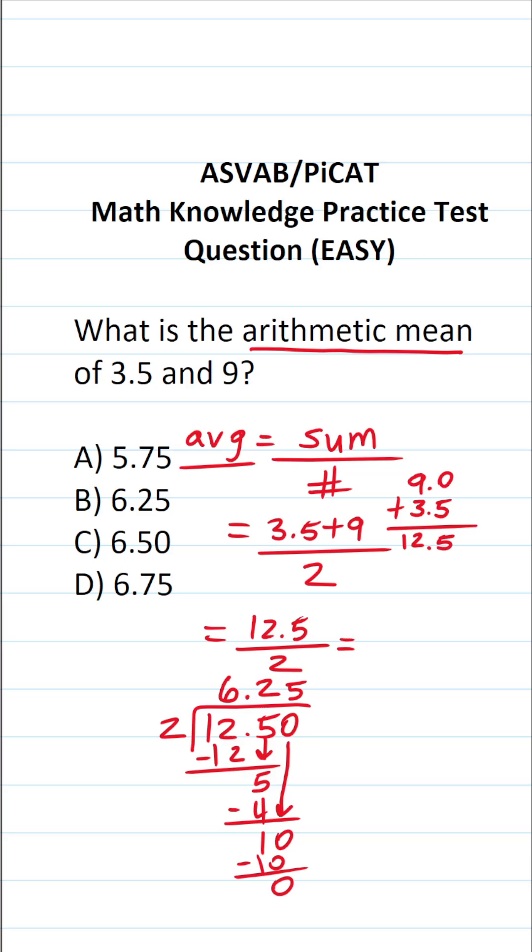12.5 divided by 2, in other words, is going to be 6.25. So what is the arithmetic mean or average of 3.5 and 9? You can see it's going to be B, 6.25.